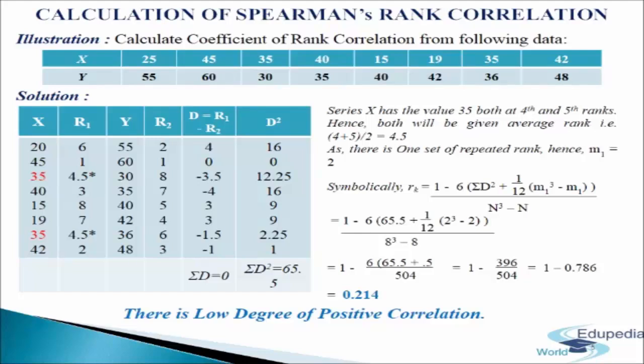Now we put up the formula for repeated ranks: rk equals 1 minus 6 times the bracket of sigma d square plus (1/12)(m cubed minus m) divided by n cubed minus n. We put up the values and calculate; we get 0.214 as the coefficient of correlation. So there is a low degree of positive correlation between series x and series y. This is how we calculate the rank coefficient of correlation when ranks are repeated.